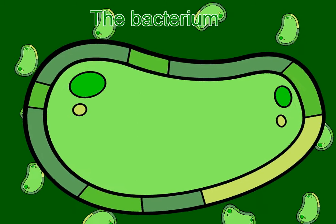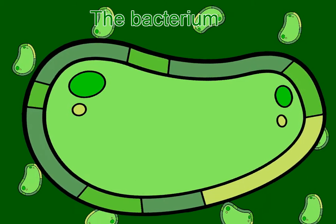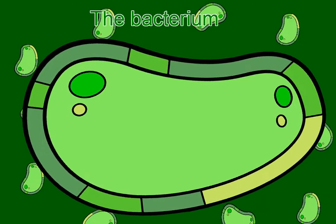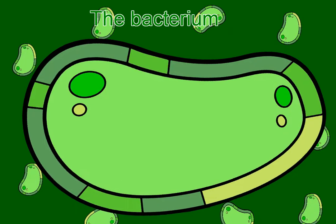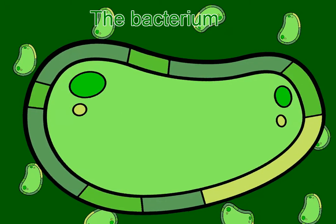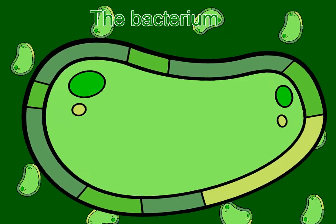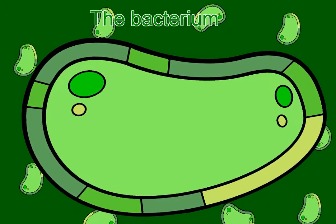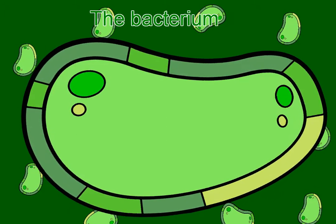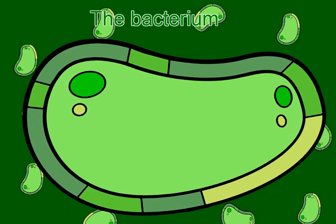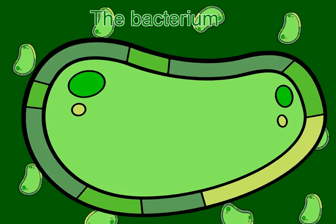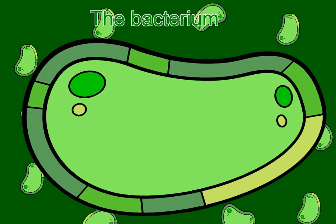The bacterium is one of the smallest organisms known to the human race. It can be found almost everywhere in the world. Bacteria are known to have many different functions. Some are situated in the intestines and help break down food during digestion, while others can produce light.